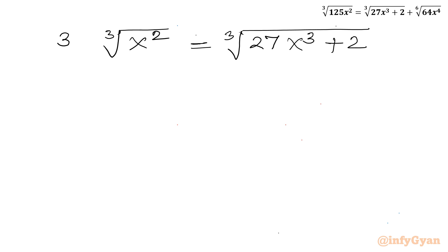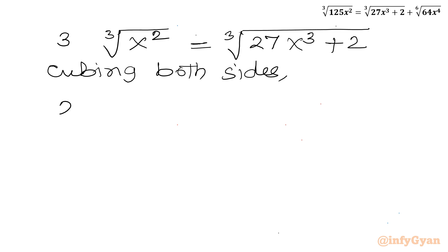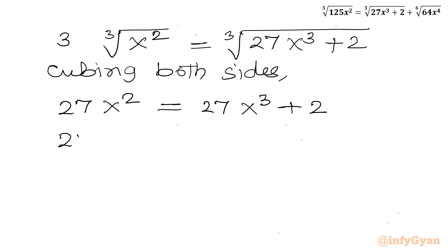So we have 3 times cube root of x² equal to cube root of 27x³⁺². Now I will cube both sides. Left hand side gives 27 times x², and right hand side gives 27 times x³⁺². Taking all terms to one side: 27x³ minus 27x² plus 2 equals 0.